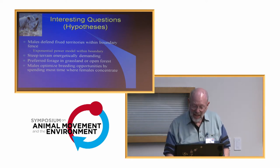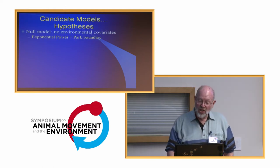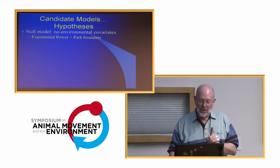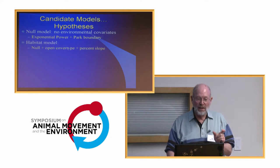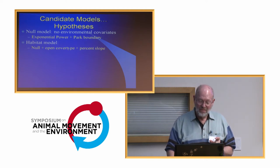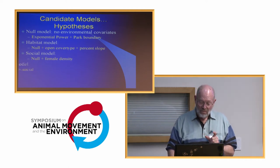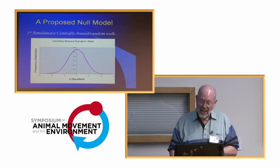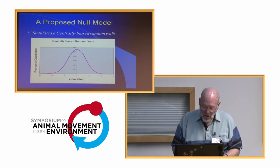The null model has no environmental covariates — exponential power plus park boundary. The habitat model is the null model plus open cover type and percent slope. The social model is the null model plus female density. And there's a combined model with all of those. When we run AIC selection, here's what the synoptic model looks like: f of u — the probability of use at position x — equals the null model times a weighting function, where the weighting function is e to the beta times h-sub-x, where h is a particular habitat covariate.